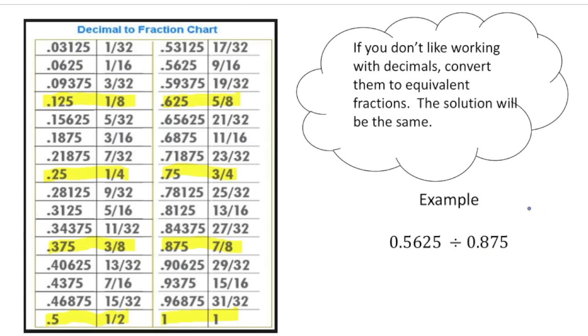So here we have .5625 divided by .875. Now, this would be kind of a pain in the butt to do with long division. But what I know is I can convert these into fractions. So .625, if you find over here, is equivalent to 9 sixteenths. So I can rewrite this as 9 sixteenths divided by .875, that one is right here, which is 7 eighths. So we're going to do 9 sixteenths divided by 7 eighths.